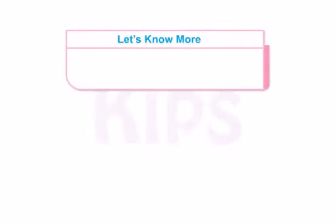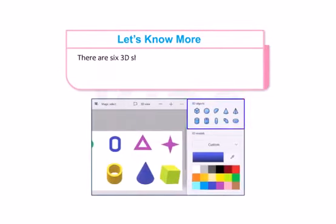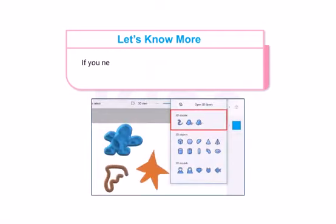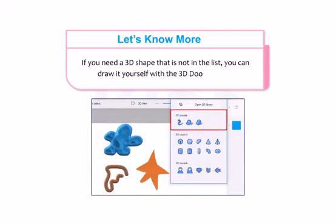Students, let us know more. There are 6 3D shapes that you can use to make your own 3D models: Square, Sphere, Cylinder, Capsule, Cone and Donut. If you need a 3D shape that is not in the list, you can draw it yourself with the 3D Doodle tools.